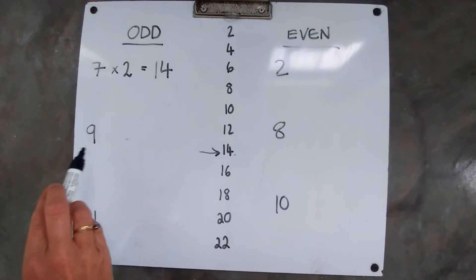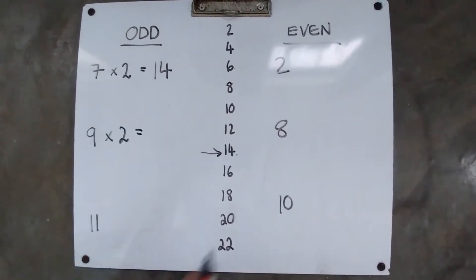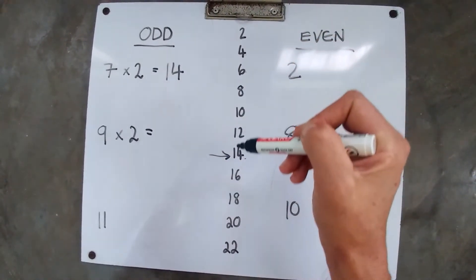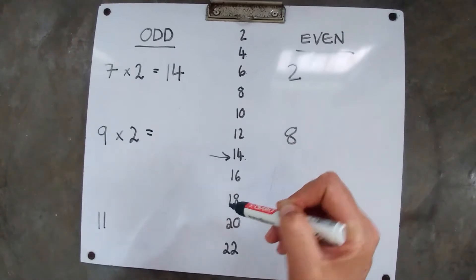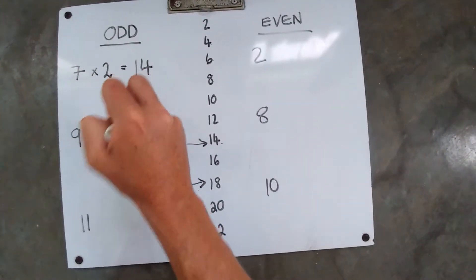Now we're going to do it with our next number, 9. So let's count 9 of them. 1, 2, 3, 4, 5, 6, 7, 8, 9. It gets me to 18. So my answer here is 18.